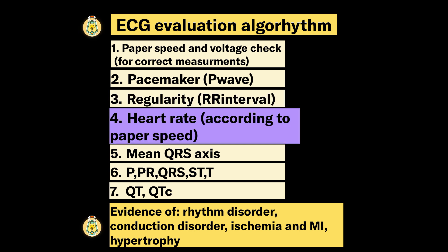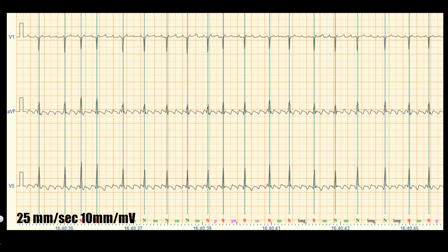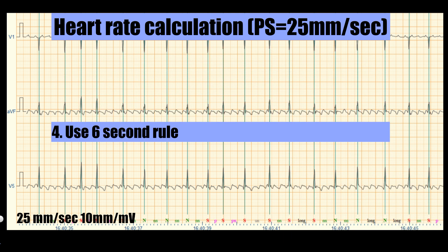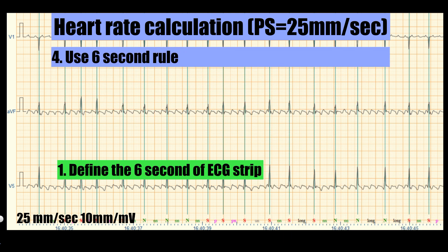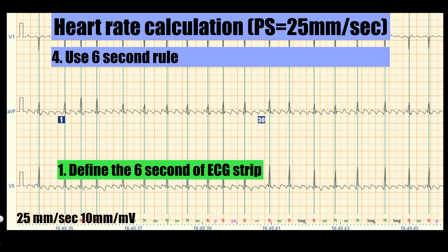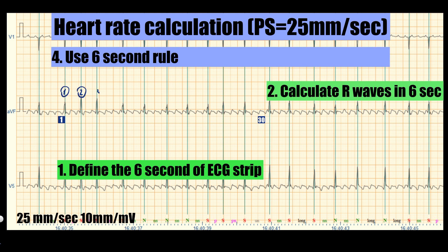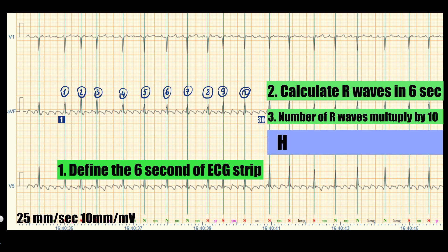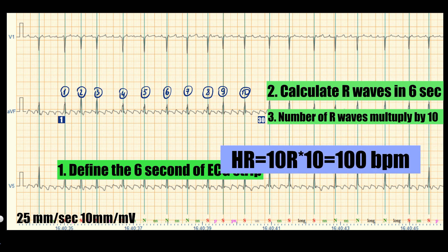Now let's calculate the heart rate. For heart rate calculation you can use any formula depending on paper speed. Using the 6-second rule, define 6 seconds on the ECG strip — at 25 mm per second, this equals 30 large boxes. Count the number of R waves inside those 30 large boxes, then multiply by 10. The heart rate here is 100 beats per minute.